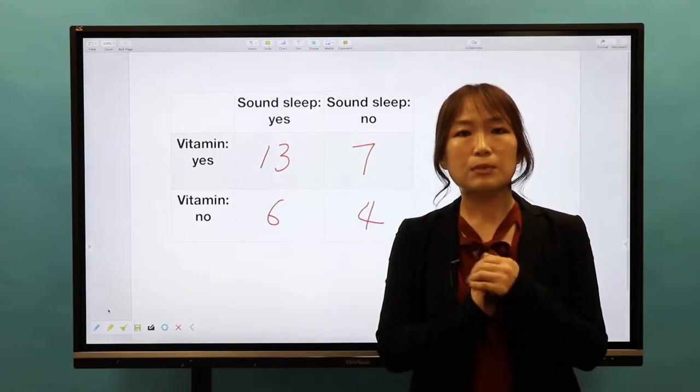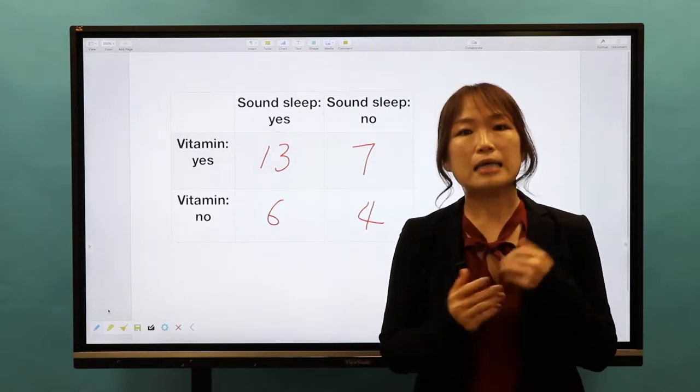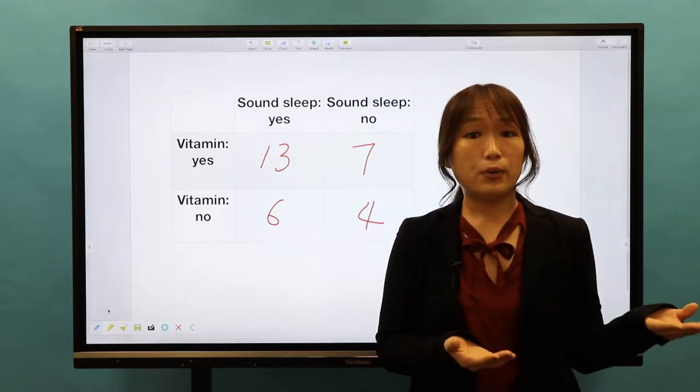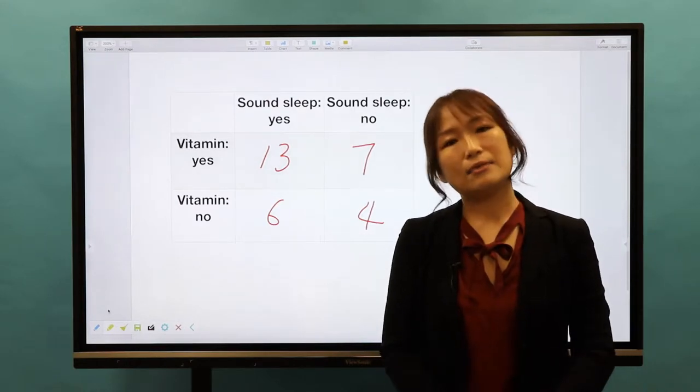It is really important with categorical variables that they be separate. A data point cannot belong to both at the same time.